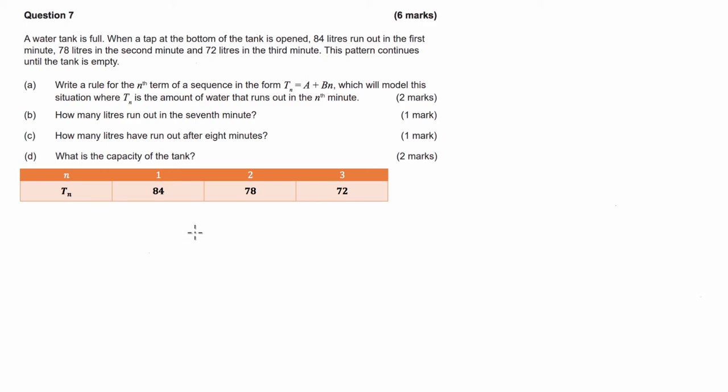Now it's pretty easy on this one to see that it's going to be arithmetic. We can see that the difference between 84 and 78 is negative 6, and 78 and 72 is also negative 6. So because of this common difference, we are going to be able to ascertain that this is an arithmetic sequence.